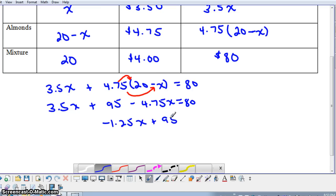To get the X by itself, we're going to subtract 95 from both sides. When we do that, 80 minus 95 would give us negative 15. Then to get X by itself, I'm going to divide both sides by negative 1.25. When I do that, I get that X is 12.